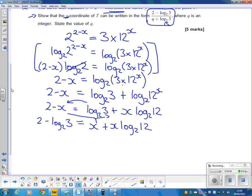Now, if you look at where we're going, we've got 2 minus log base 2 of 3. That is the top of the fraction that we want, so we're going in the right direction. Nice little trick here: we've got 2 x's in the equation, we only want 1. So if we factorize, we can end up with x on the outside, and that's times 1 plus log base 2 of 12.